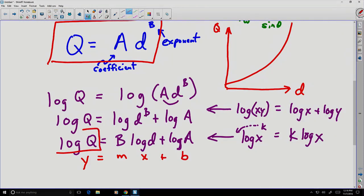As long as we recognize that the logarithm of Q could be considered as our y value, the logarithm of d is our x value, the logarithm of A is our b value, and the slope is that large b that we have there. The fact that this is a linear equation is particularly useful.